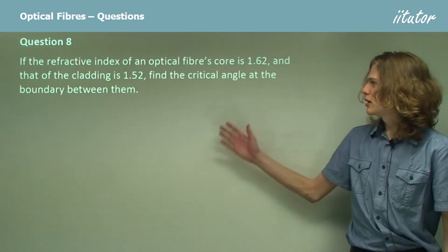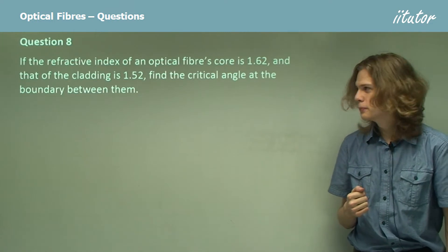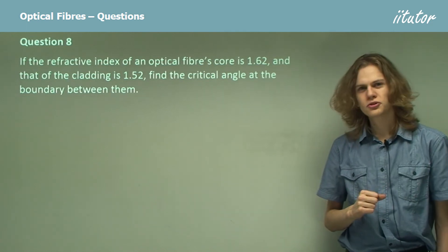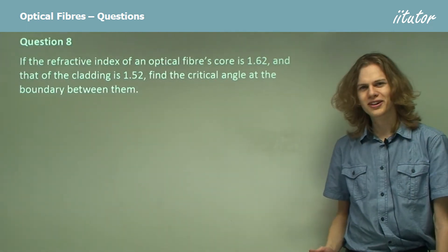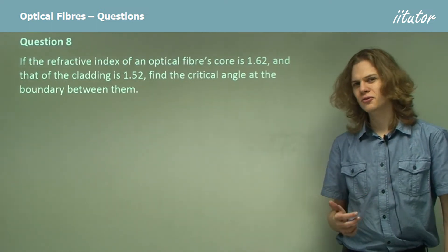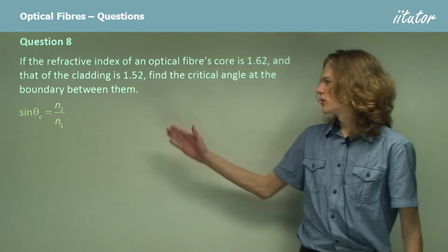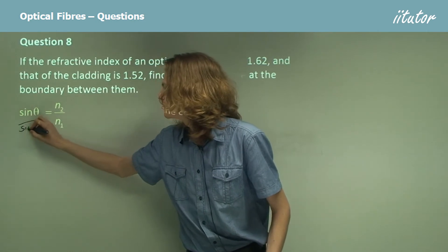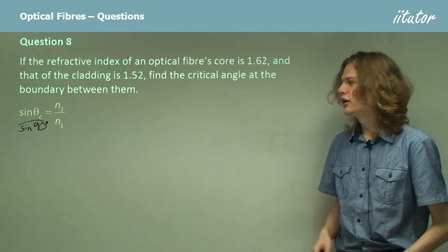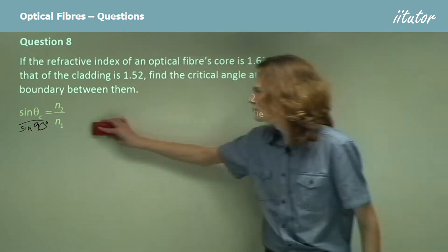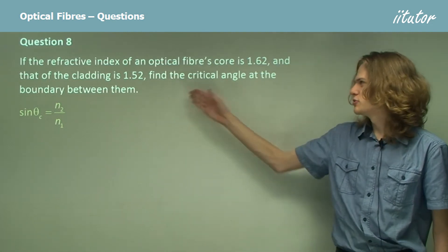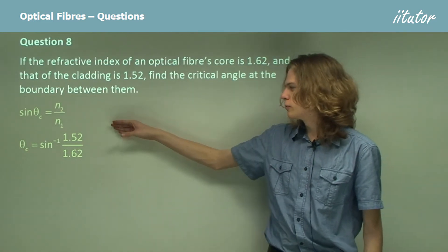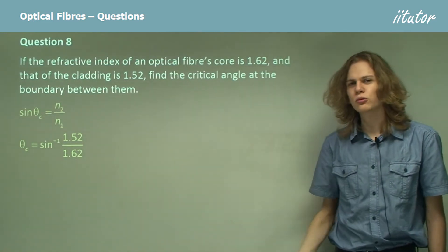Question 8. If the refractive index of an optical fiber's core is 1.62 and that of the cladding is 1.52, find the critical angle at the boundary between them. We use Snell's law: the sine of the critical angle divided by the sine of 90° equals N2 over N1. That's how we define the critical angle. Substituting in our refractive indices and taking the inverse sine, we get the inverse sine of 1.52 over 1.62, which equals our critical angle.